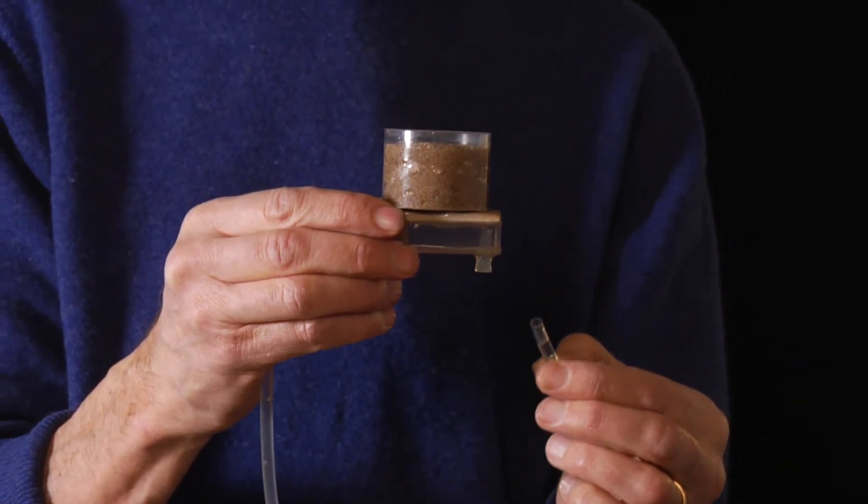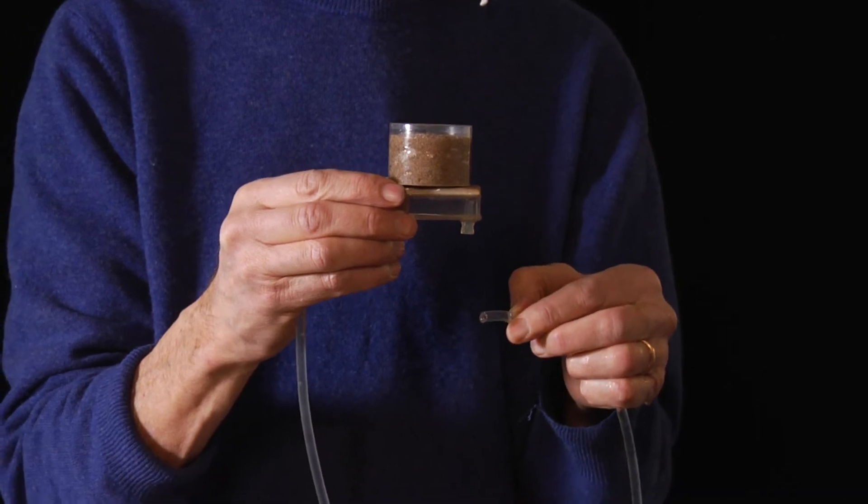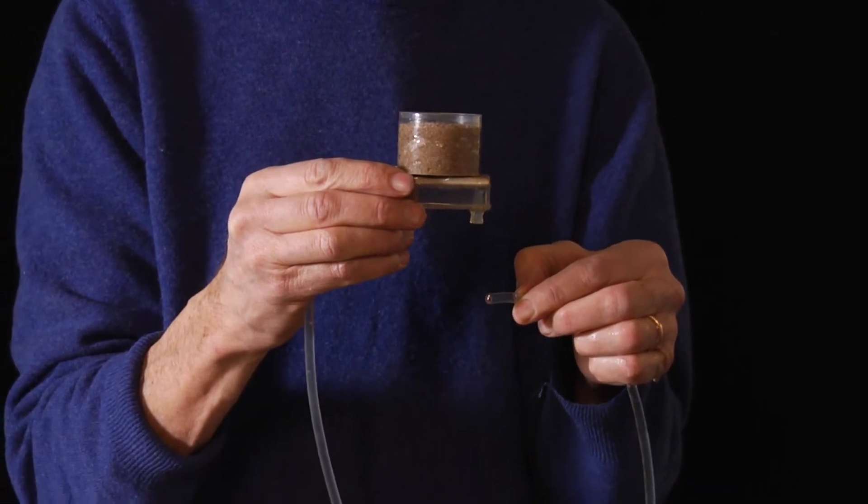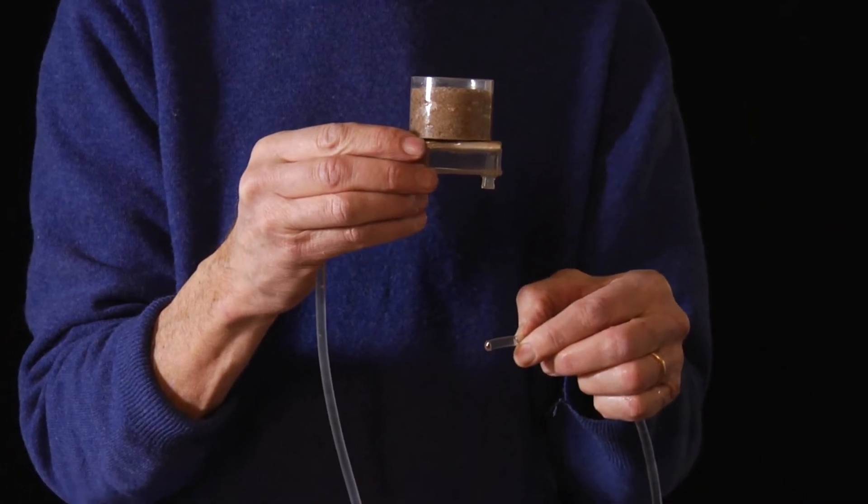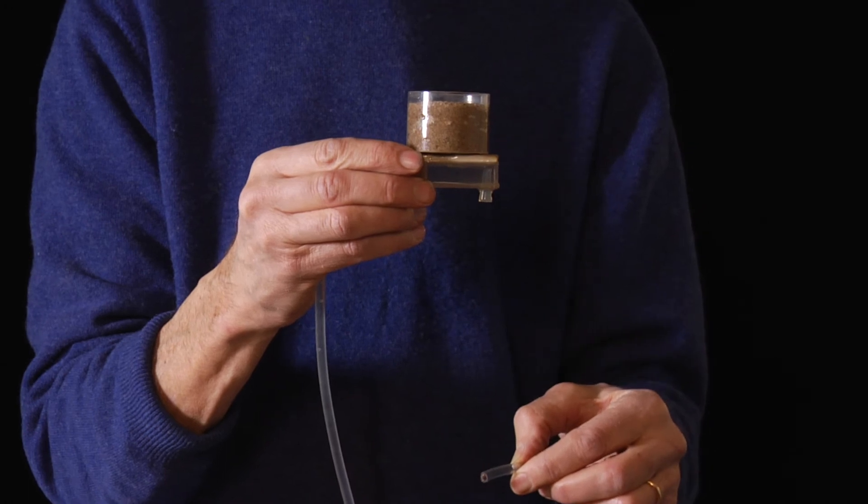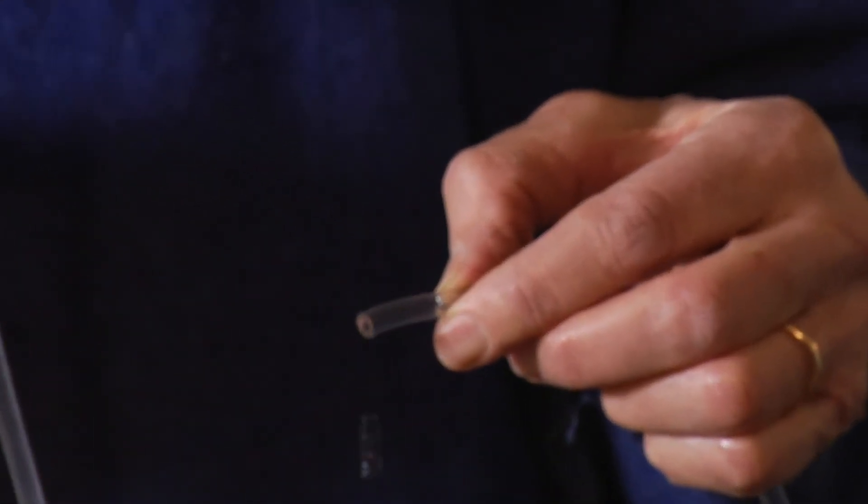I lower the tube, creating a negative pressure in the plate and in the soil. Now it's minus 5 centimeters and a single drop is falling. I lower it to 10, a few drops are coming. When I have lowered to 15, an intense dripping starts.